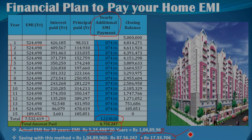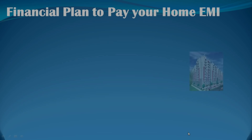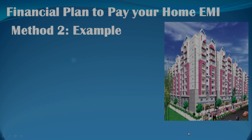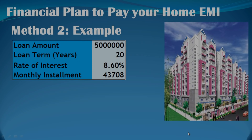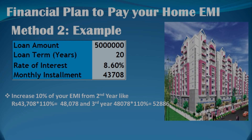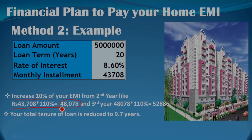I am going to discuss the second method now. In the first year, we had 10% of the EMI. I put a 10% increase on the EMI to start this method. This is a total EMI that allows you to increase each year — in the second year, you pay a higher amount, and by continuing this pattern, you pay off the loan much faster.